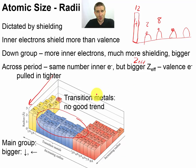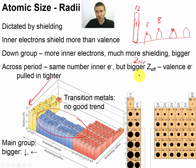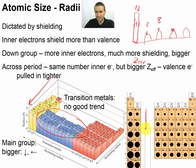If we ignore the transition metal trend and look just at the radius from a broader view, the trend really jumps out: radii are going to get much larger as you go down the table, and they're going to get much smaller as you go across a period.